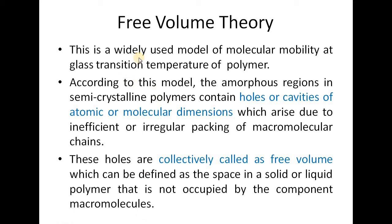What do we mean by the free volume theory and free volume model? This free volume theory is related to the molecular mobility of the polymeric chain at glass transition temperature. According to this model, the amorphous regions contain various holes or cavities of atomic or molecular dimensions which arise due to the irregular or inefficient packing of macromolecular chains. These holes or cavities are collectively known as free volume — the free space available to polymeric chains, within which they can rotate about their bonds.